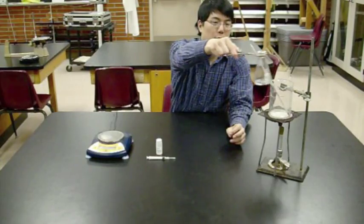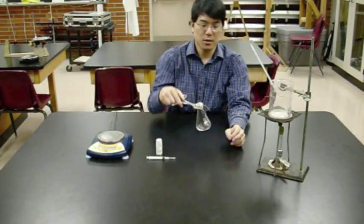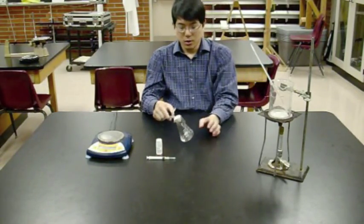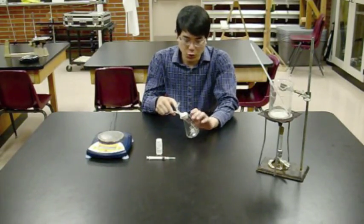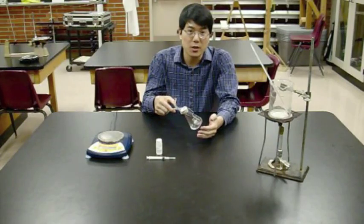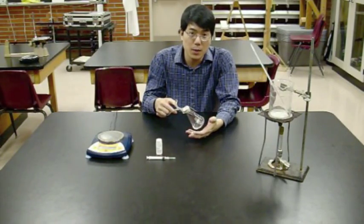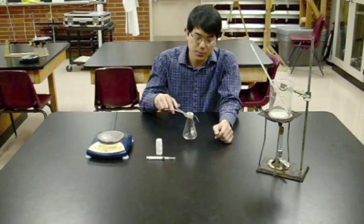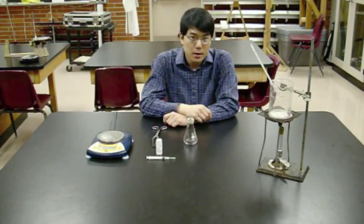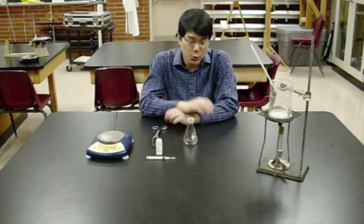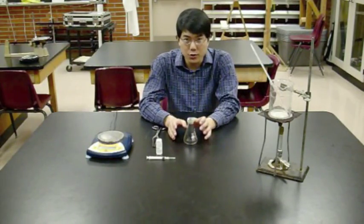Take the Dumas tube out of the hot water bath and put it on a towel. Dry off the glass walls to get all the water droplets off, otherwise they'll affect your mass measurements. Then let it sit.